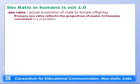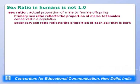The primary sex ratio reflects the proportion of males to females conceived in a population, ideally 50:50. The secondary sex ratio reflects the proportion of each sex that is actually born. The male contributes the sex-determining factor — the Y chromosome — so the male determines the sex of the offspring.